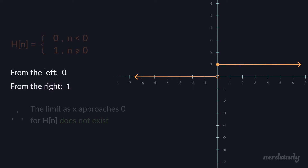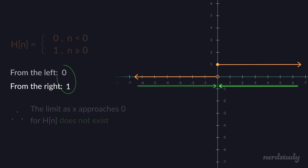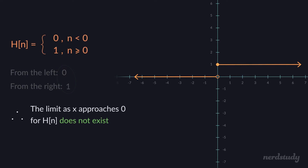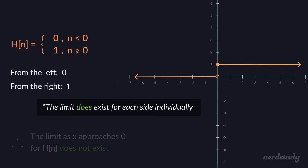Because it's approaching two different numbers depending on direction — approaching 0 from the left yields y → 0, and approaching 0 from the right yields y → 1 — when the two directional limits disagree, we can say for a fact that the overall limit does not exist. However, you cannot say that the limit does not exist as it pertains to only the left side or only the right side.